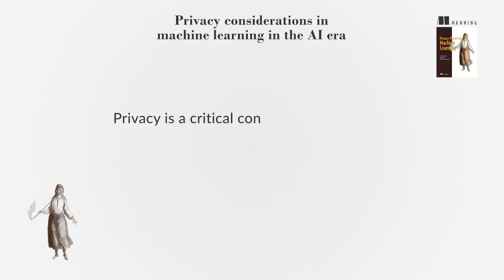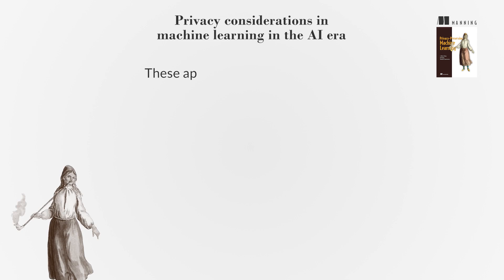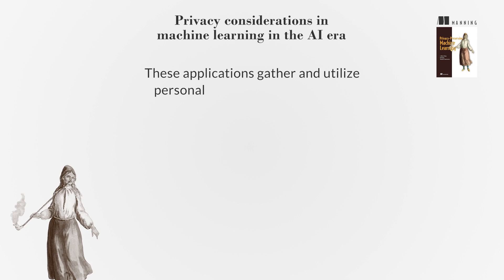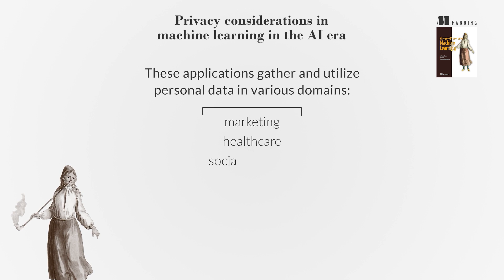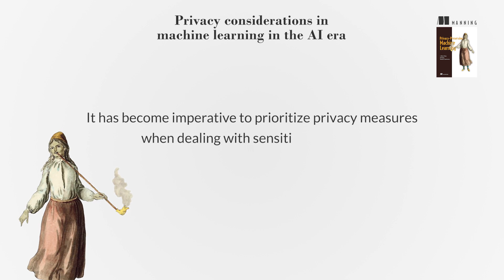Privacy is a critical consideration in the era of artificial intelligence, particularly in machine learning ML applications. These applications gather and utilize personal data in various domains, including marketing, healthcare, and social networks. However, the use of this data can also lead to privacy risks, as sensitive information can be inferred. Thus, it has become imperative to prioritize privacy measures when dealing with sensitive datasets.